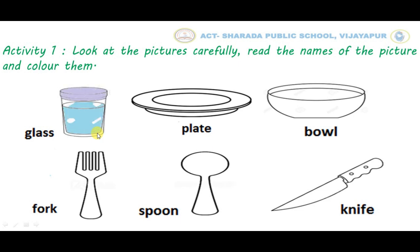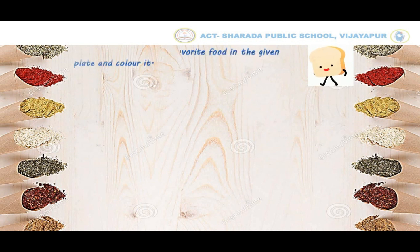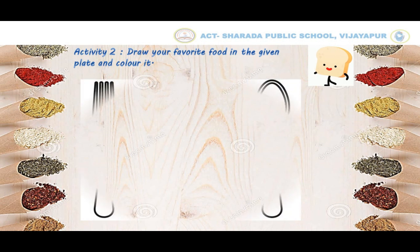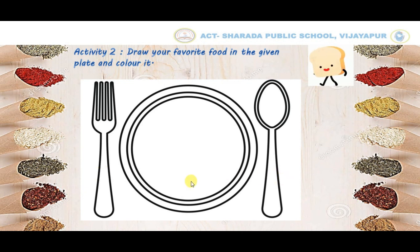In the same way you have to identify, name, and color the pictures. Now let us do our second activity — draw your favorite food in the given plate and color it. Here we can see an empty plate, fork, and spoon. In this plate you have to draw your favorite food item.